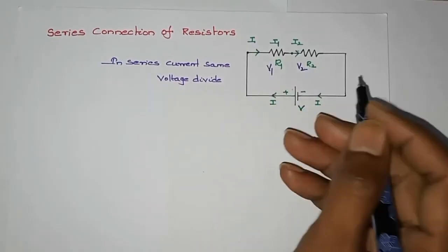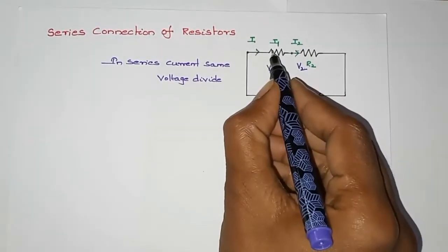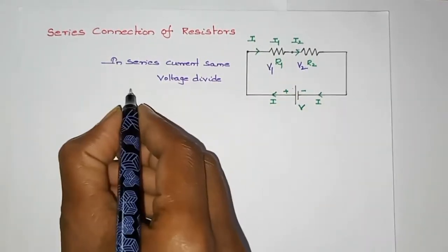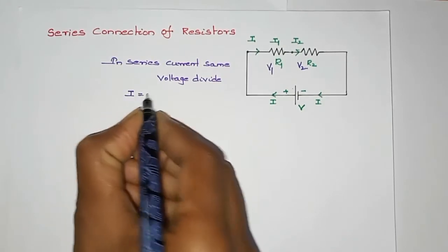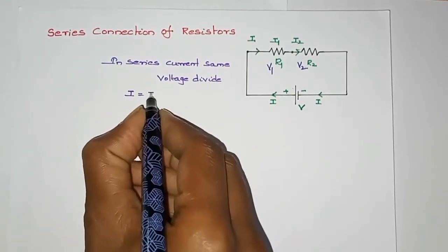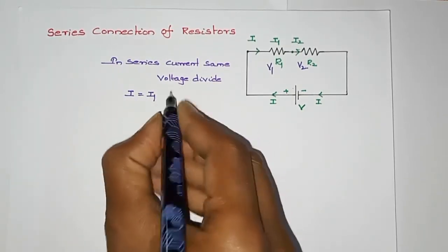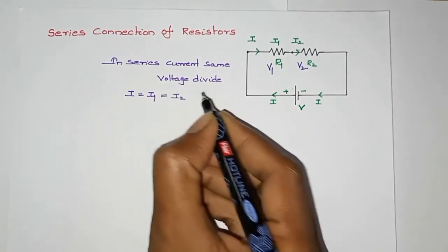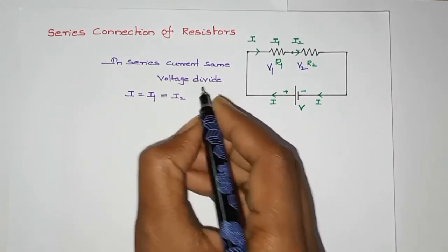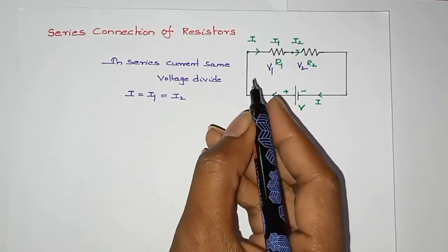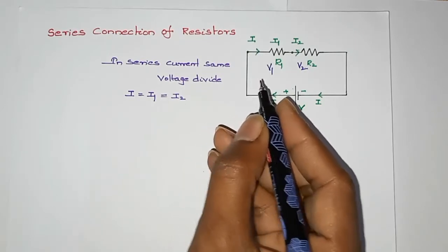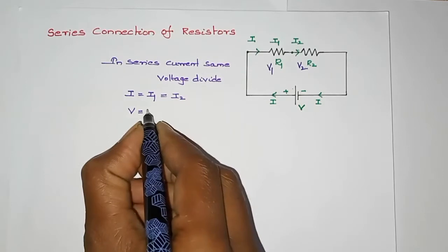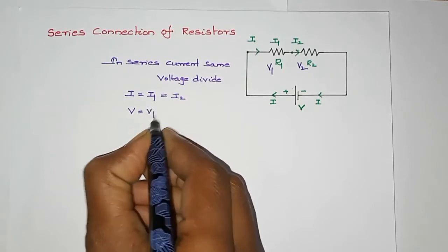Total current I is equal to I1 plus I2 — the current at resistance R1 and the current at resistance R2. Voltage V is equal to V1 plus V2.